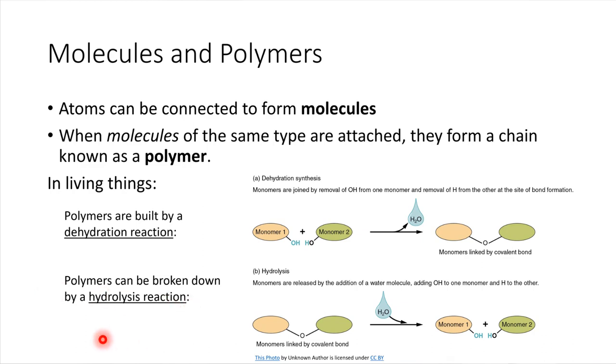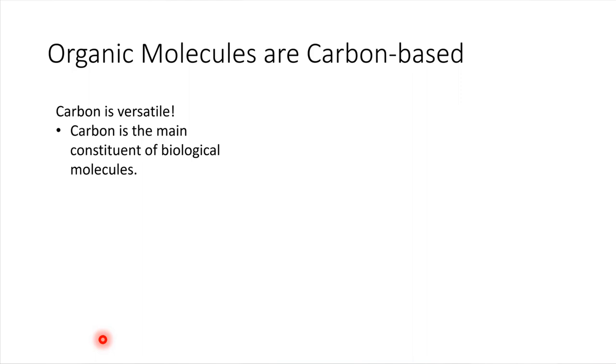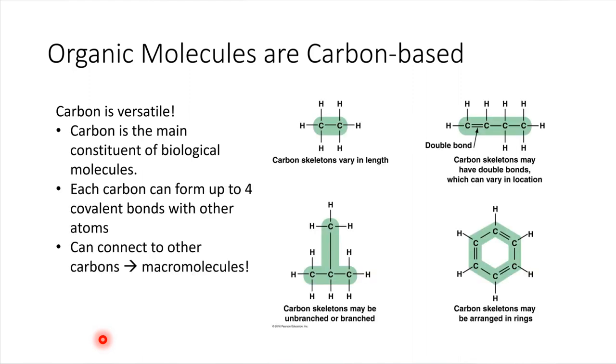So with that being said, let's talk more about the molecules that are involved in living things. It turns out, in living things, most of the molecules we'll see are going to be carbon-based, and there's a reason for that. Carbon is really versatile, it can connect to a lot of different other types of elements, and so it makes a really good building material. Carbon can form up to four covalent bonds with other atoms.